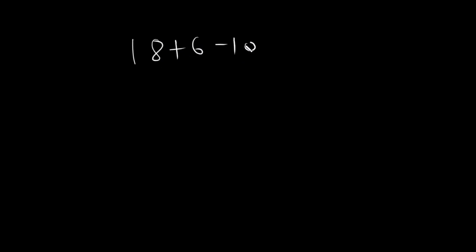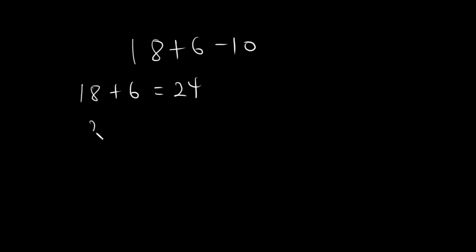Now let's take some examples. Let's say we want to solve 18 plus 6 minus 10. What do we need to do first — should we add or subtract? Either of the two ways will work, because addition and subtraction have the same precedence. Now let's try to add first: 18 plus 6 is equal to 24, and then 24 minus 10 is equal to 14.